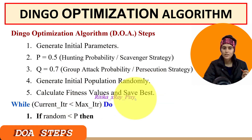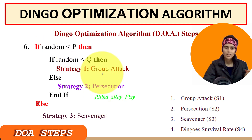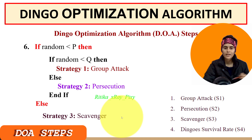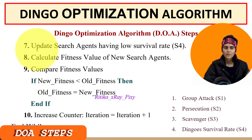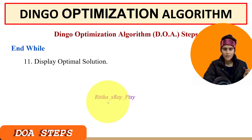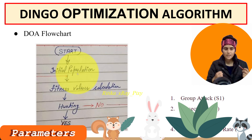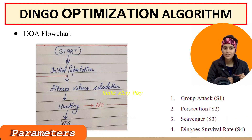We calculate the fitness value for each agent, save the best, and then the main loop starts. In the main loop, we check the hunting mode — whether it is group hunting, individual hunt, or random walking in the search space — then update the search agent, calculate the fitness value for the new search agent, compare fitness values, increment the counter, and repeat until the stopping condition is met. Once met, we display the best solution found.